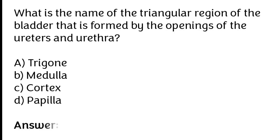The correct answer is option A. Trigone is the name of the triangular region of the bladder that is formed by the openings of the ureters and urethra.